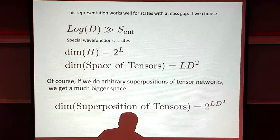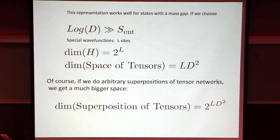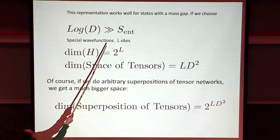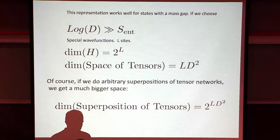What is found is that this representation works pretty well. It describes well ground states of systems if the system has a mass gap - basically, the important property is that the entanglement entropy is finite. If you divide the system into two, you have a finite amount of entanglement between the two sides. As long as the dimension D of the tensors is big enough, one gets a good, accurate description. People have done this numerically and gotten very nice results.